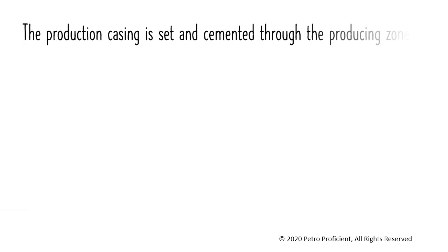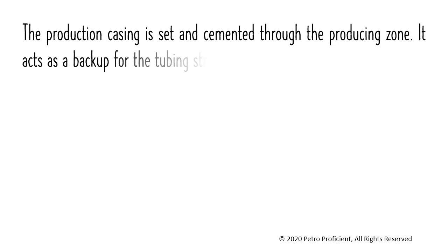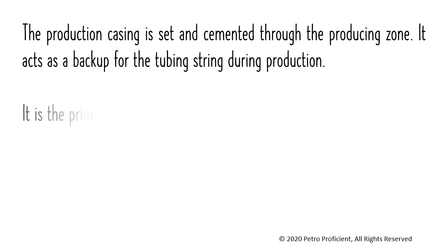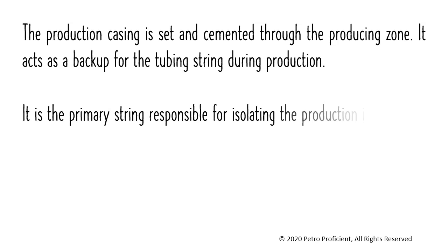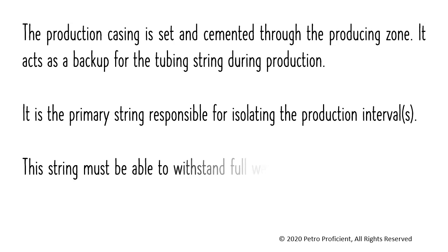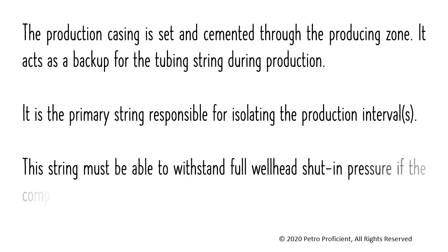The production casing is set and cemented through the producing zone. It acts as a backup for the tubing string during production and is the primary string responsible for isolating the production intervals. This string must be able to withstand full wellhead shut-in pressure if the completion or production tubing leaks or fails.